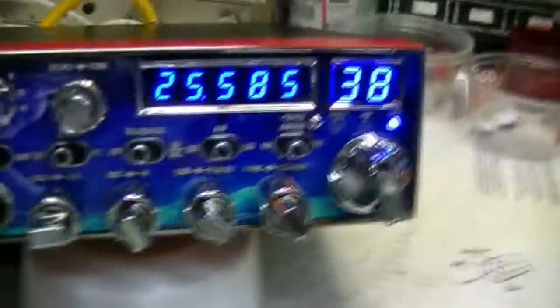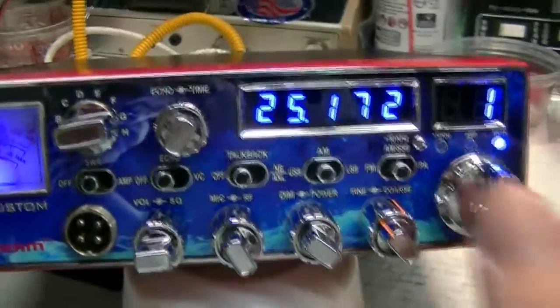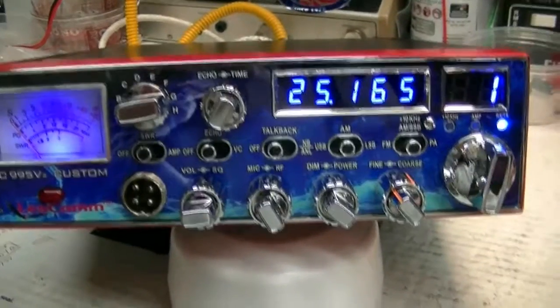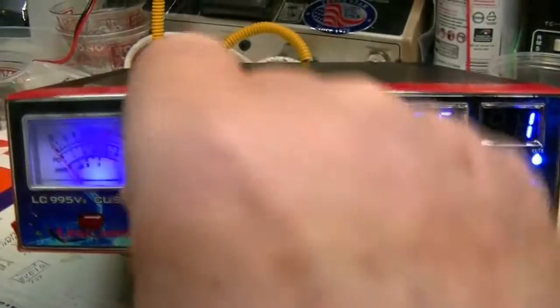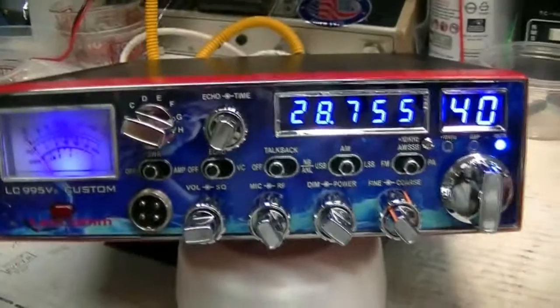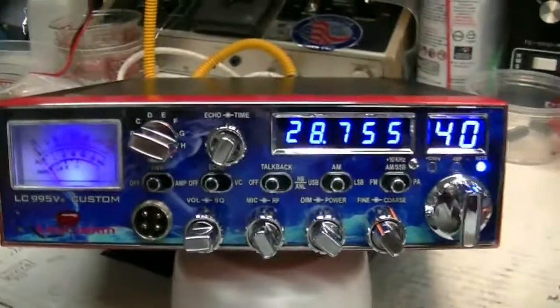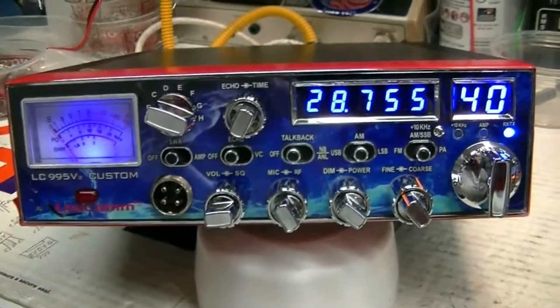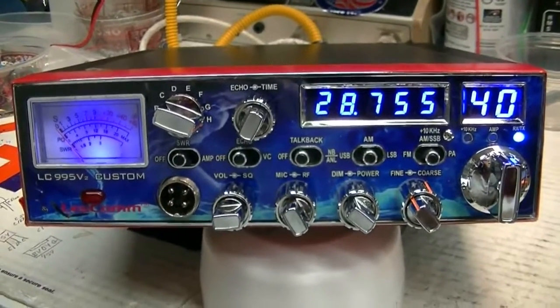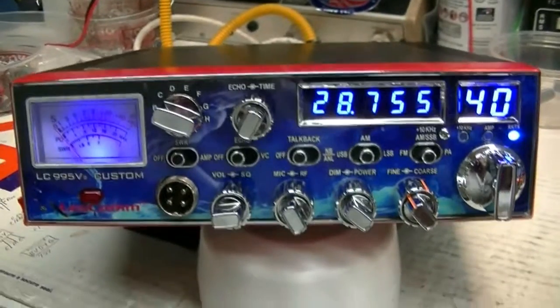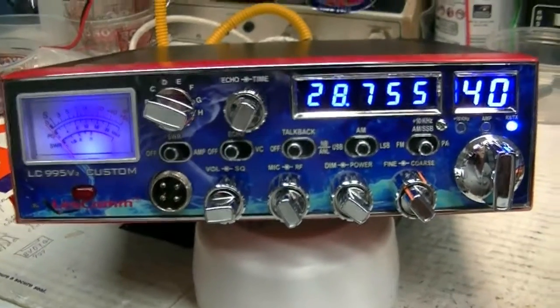And it goes all the way down to 25.165, down real close to 12 meters, and then it goes all the way up to 28.755. But like I've said before, if you do not have an amateur license, a ham license, do not talk on 28 megahertz. You can listen all you want to, just do not transmit on 28 megahertz.